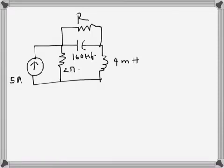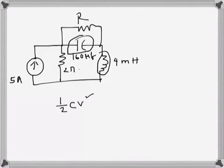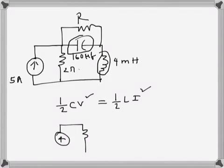We will have to find the value of R for which the energy stored in the capacitor will be the same as that stored in the inductor under DC conditions. The energy stored in the capacitor is half CV squared and the inductor is half LI squared. Under DC, this circuit will become like this.